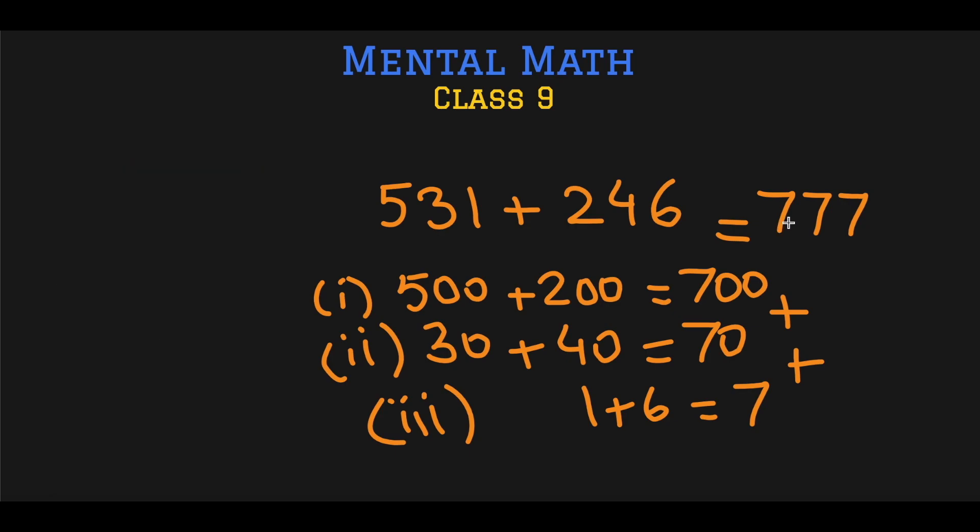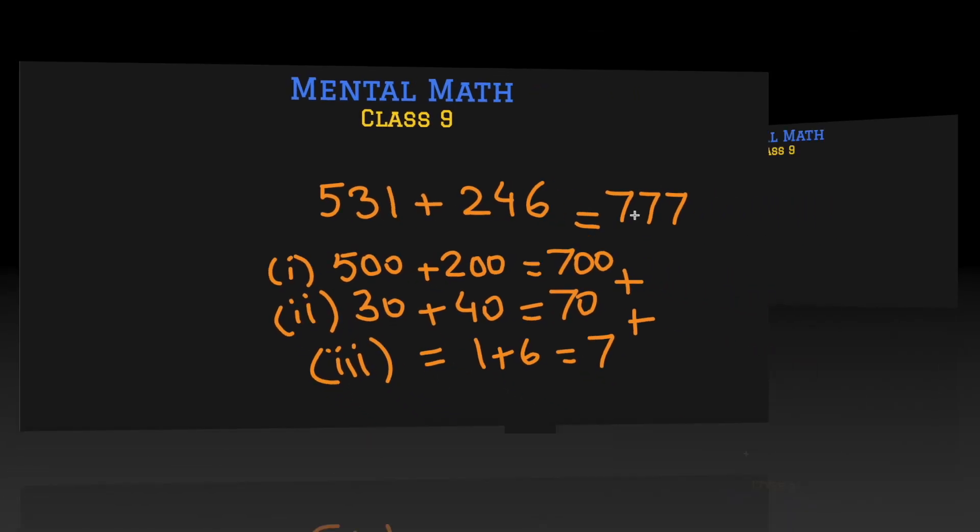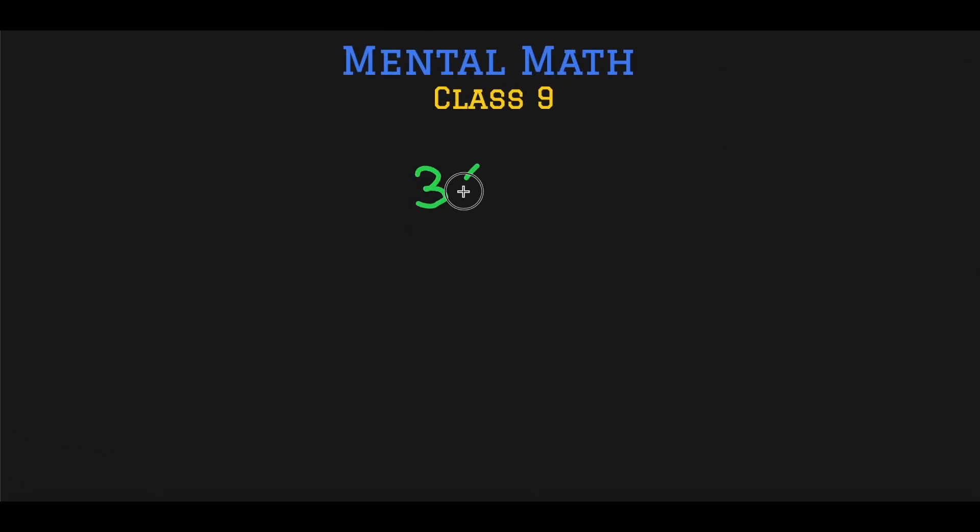Let's do another question: 364 plus 529. So 300 plus 500, 800. 60 plus 20, 80. 4 plus 9, 13. Now you need to know your single-digit addition very well to arrive at that answer lightning fast. Now remember we got an extra 10 here, so we have to give this 10 to this number. This is where you have to be careful. So the answer is 893.